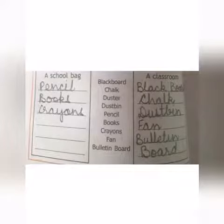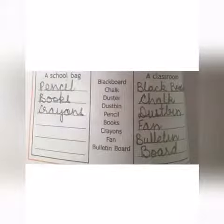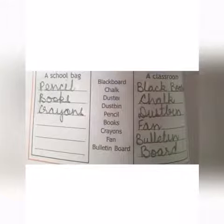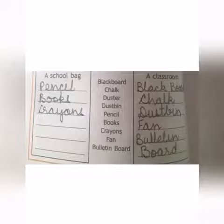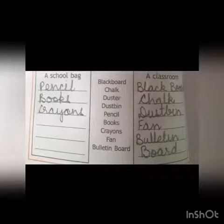The things we listed under the school bag heading belong to a child — his or her own. He or she uses them only, so these are private property. Whereas all the things in the classroom list are used by all the students of the class. Property that belongs to everyone and not to any single person is called public property.